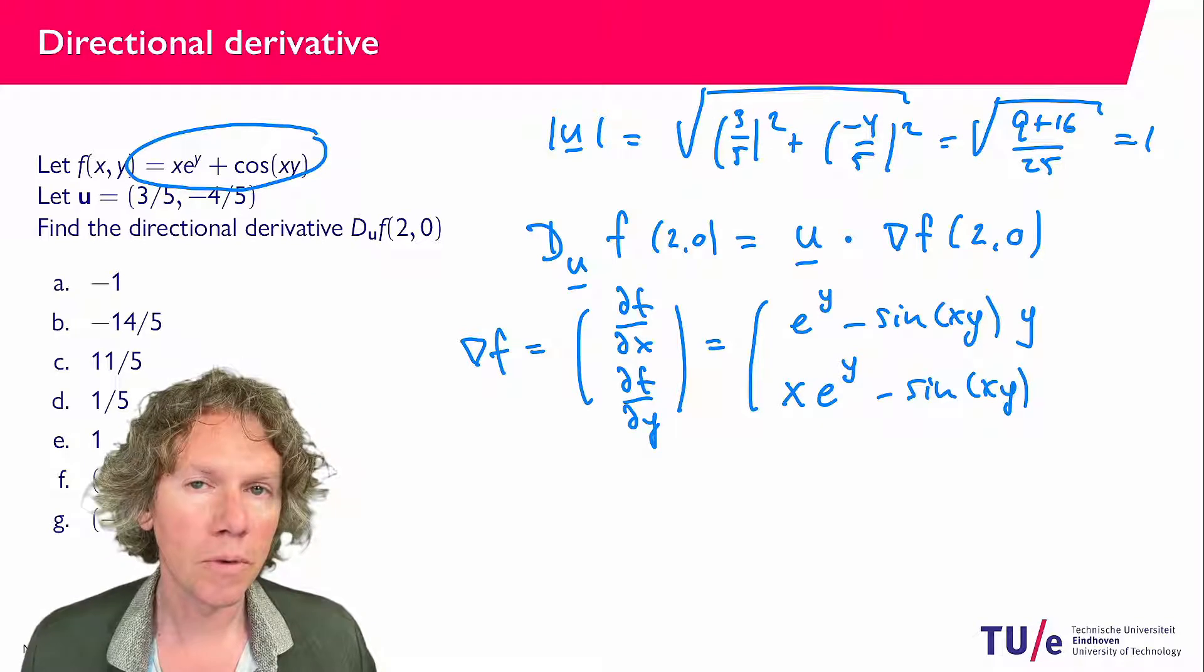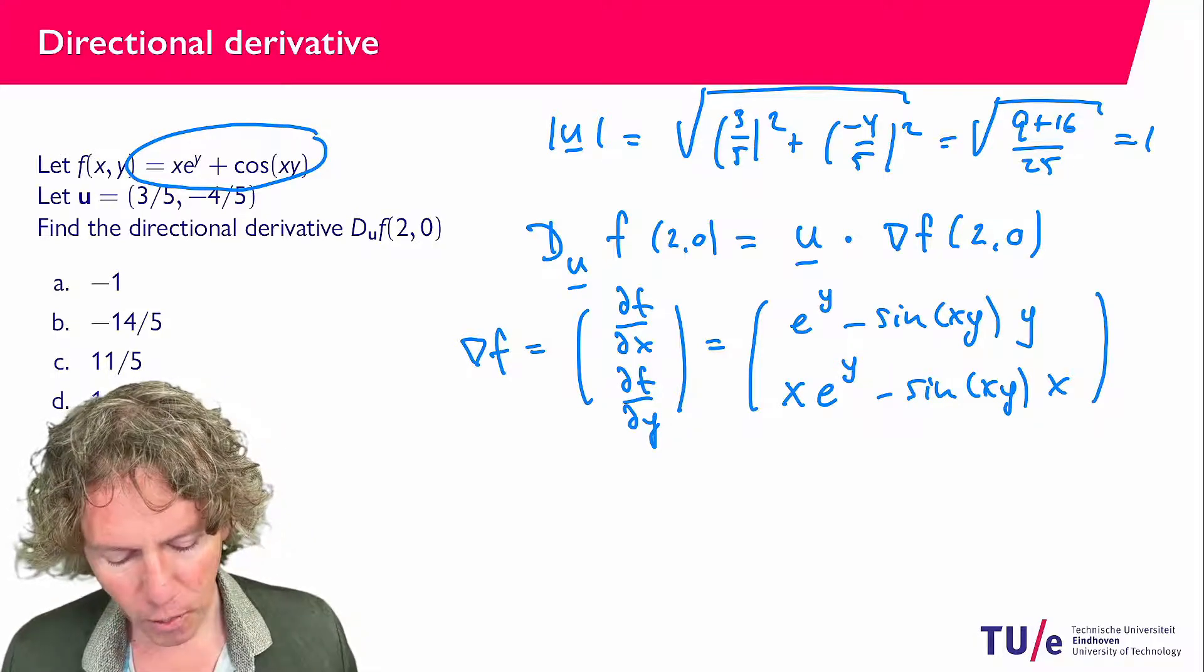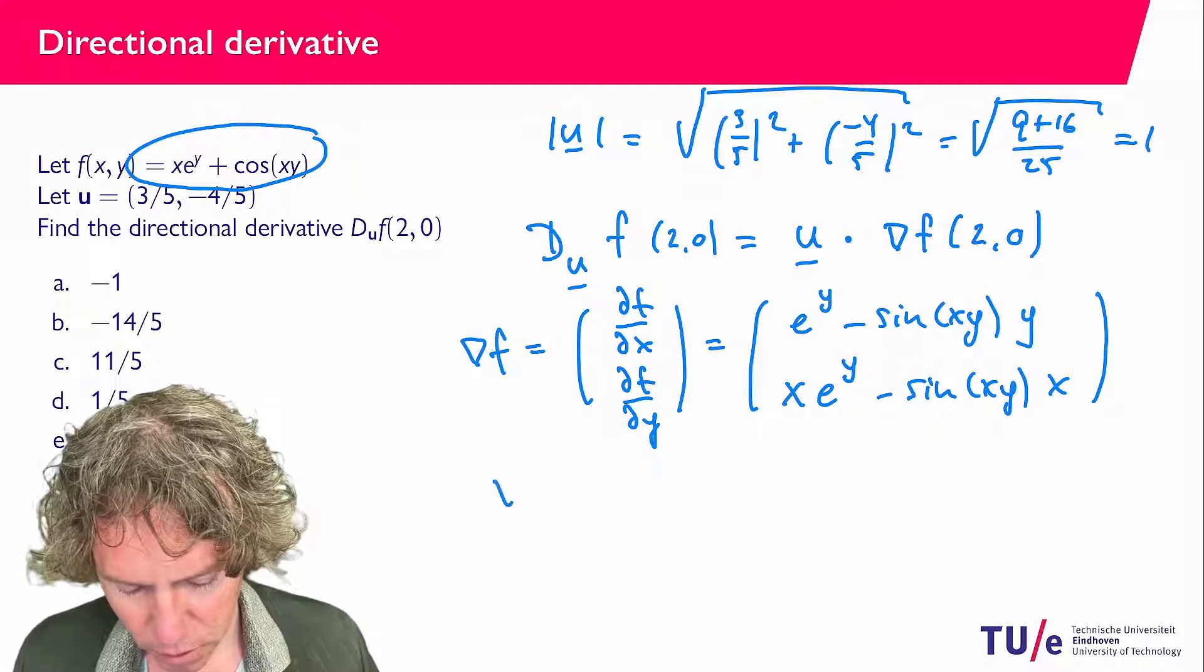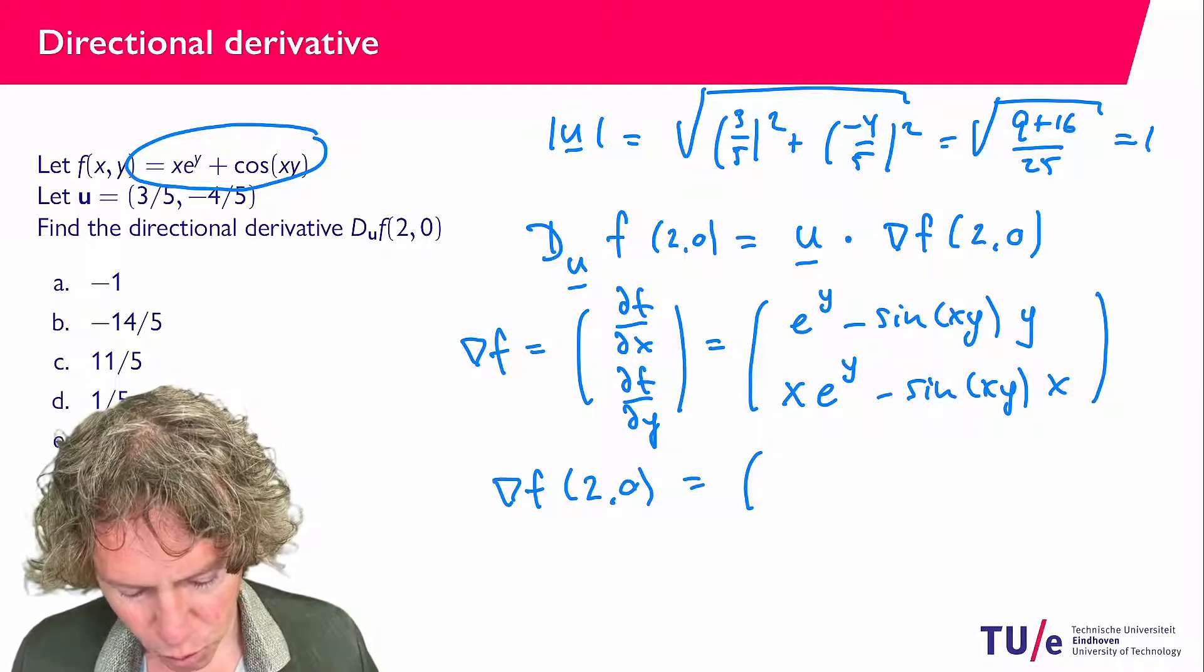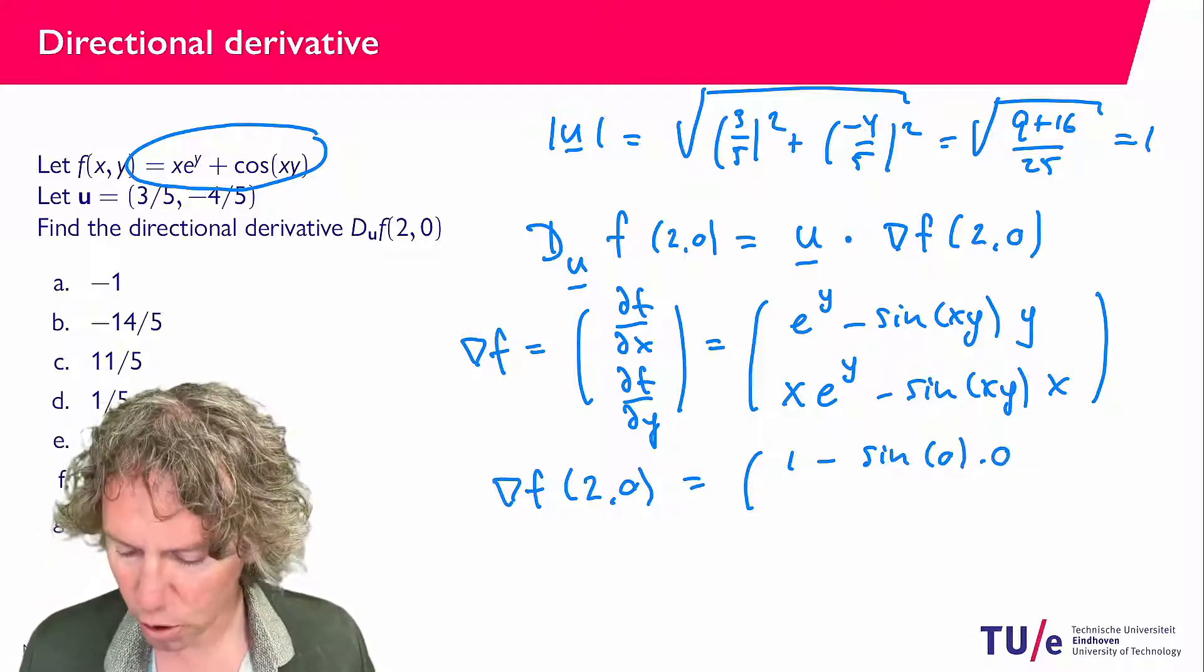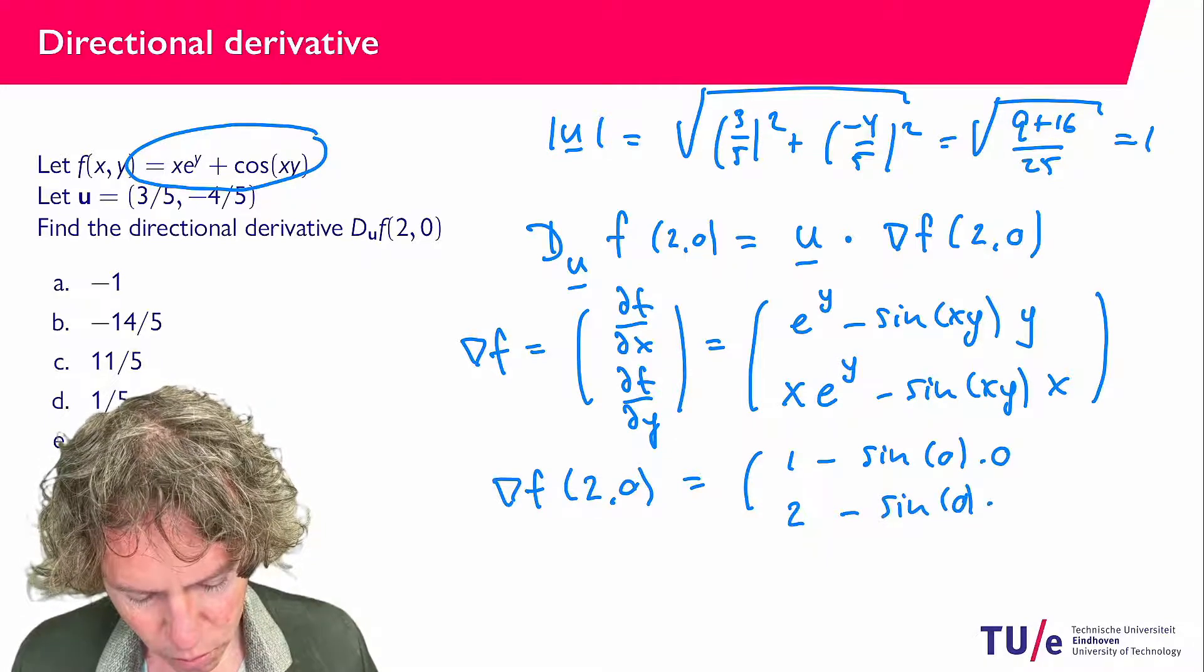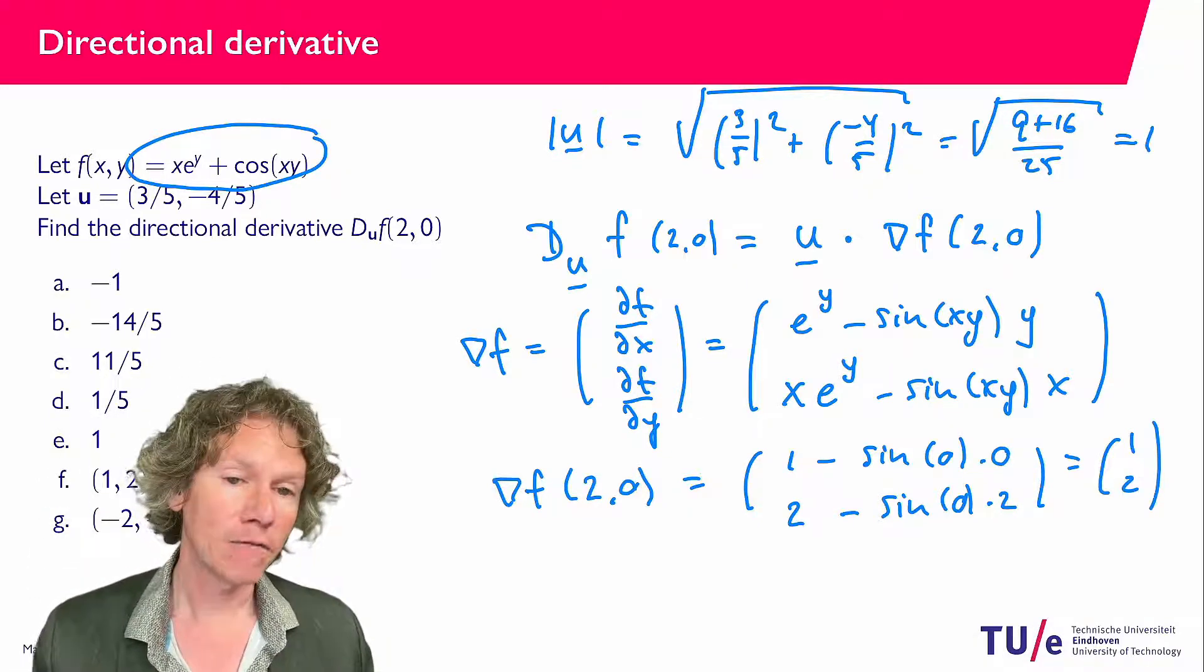If I plug in x equals 2 and y equals 0, then what we find is that the gradient of f at (2,0) equals (e^0, which is 1, minus sin(0) times 0, so that's just 1) and the second component (x is 2 times e^y is 1 minus again sin(0) times 2), so we get the vector (1,2). We're almost done because the last thing is just computing the dot product.